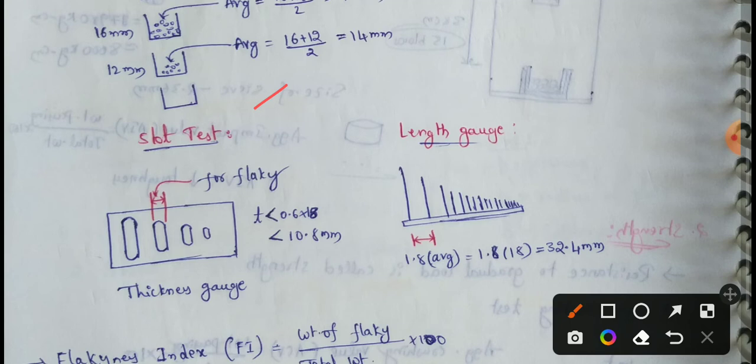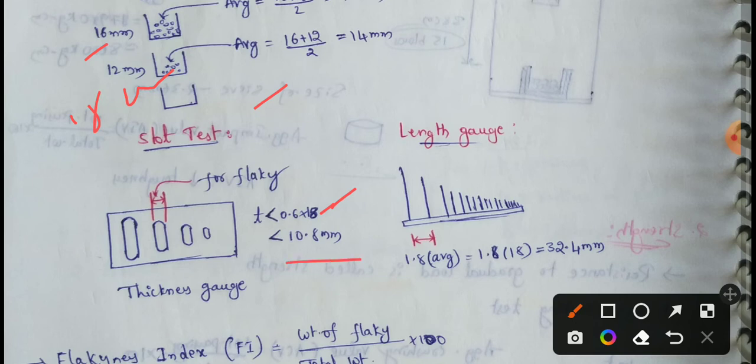If the aggregate passes through, we take its weight. We then calculate the flakiness index. For example, with a mean dimension of 18 mm, the thickness threshold is 0.6 × 18 = 10.8 mm. Particles with thickness less than 10.8 mm are considered flaky.